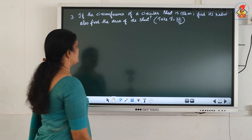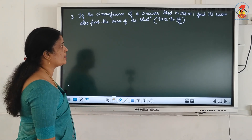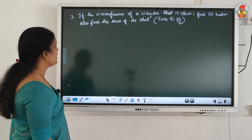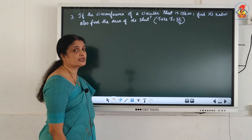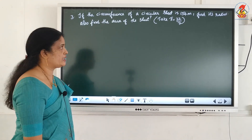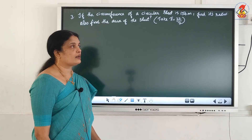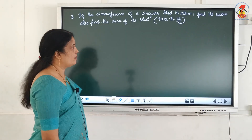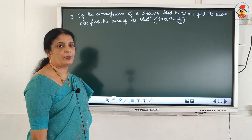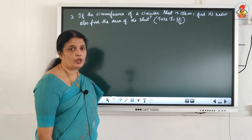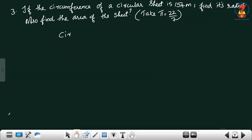Question number 3: if the circumference of a circular sheet is 154 meter, find its radius and also find the area of the sheet. Already given circumference equals 154 meter. From circumference we can find radius. The formula for circumference is 2 pi r.